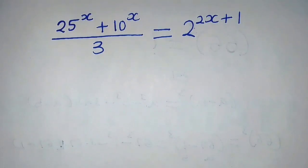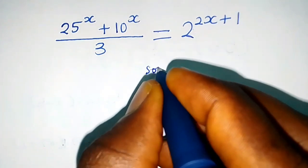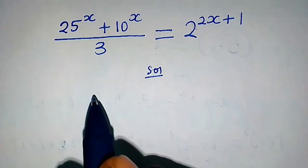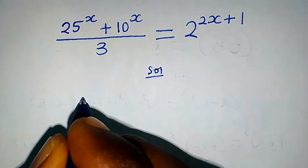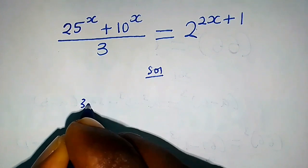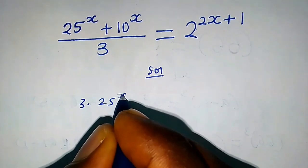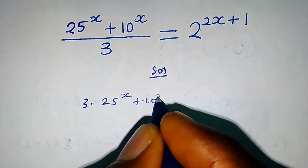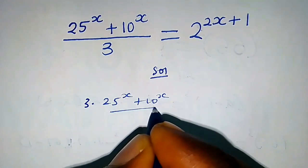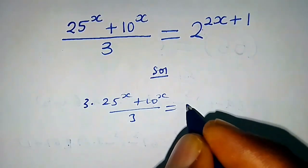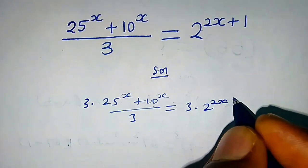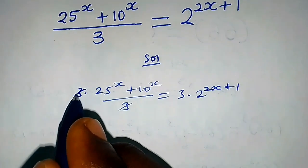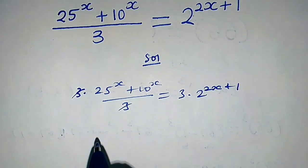Hello. How do we solve this pretty equation? Let's multiply both sides by 3 to get rid of the denominator. So we're going to have 3 times 25 raised to the power x plus 10 raised to the power x over 3 equals 3 times 2 raised to the power 2x plus 1.